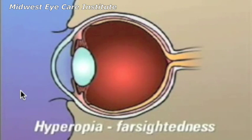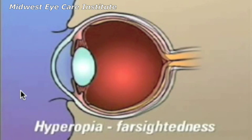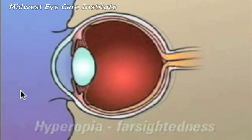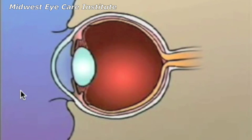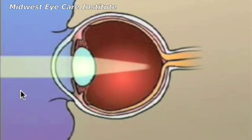Hyperopia or farsightedness occurs when the shape of the eye is too short. In this case, light rays are focused at a point behind the retina.